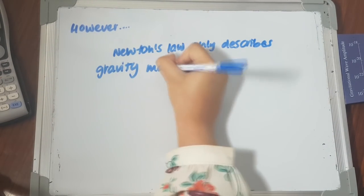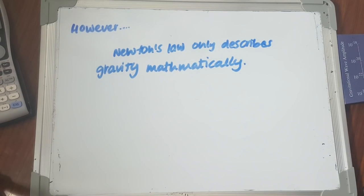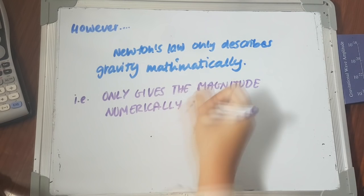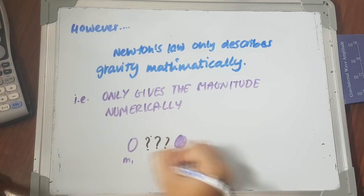Now, that's all cool and good, except for the fact that Newton's law is only a mathematical description of gravity. It only gives the strength of the pulls, but doesn't ever elaborate on how the pulls are being carried out.